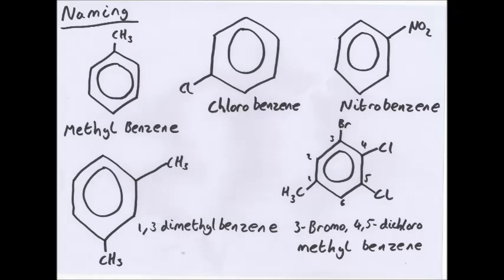And then here you have a selection. You have 2 chlorines, 1 bromine and a methyl group. Now the methyl becomes the lowest number so that's where the methyl is. And you do it in alphabetical order. So it's 3-bromo-4,5-dichloro-methylbenzene.